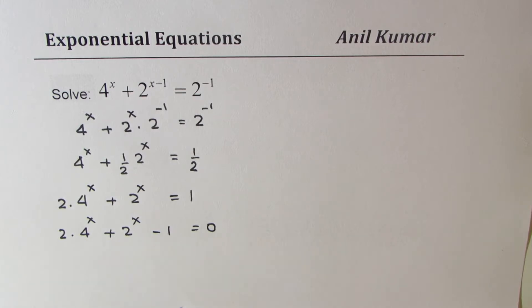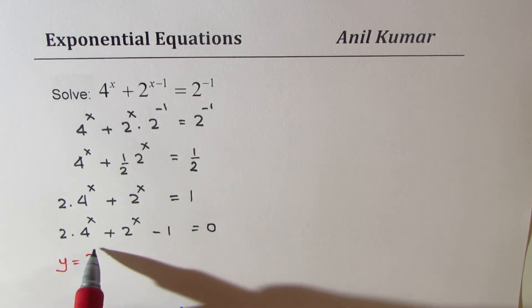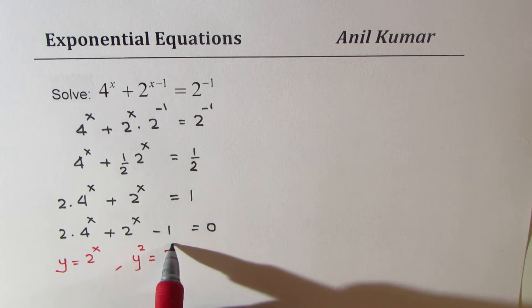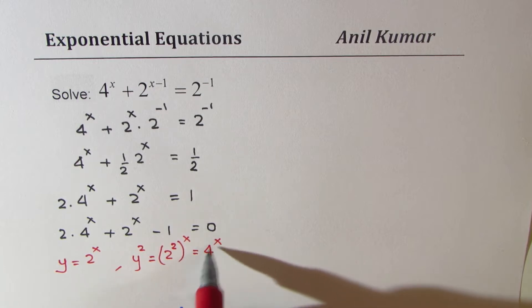Now, this equation could be written in quadratic form. How? If y is equal to 2 to the power of x, in that case, y square will be equal to 2 to the power of 2x, which is same as 4 to the power of x.